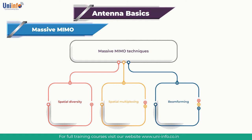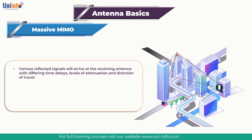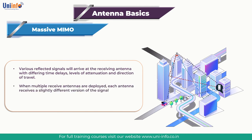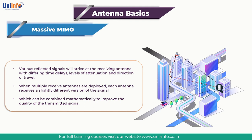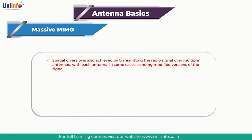MIMO builds on the fact that a radio signal between transmitter and receiver is filtered by its environment, with reflections from buildings and other obstacles resulting in multiple signal paths. The various reflected signals arrive at the receiving antenna with differing time delays, levels of attenuation, and directions of travel. When multiple receive antennas are deployed, each antenna receives a slightly different version of the signal, which can be combined mathematically to improve the quality of the transmitted signal. This technique is known as spatial diversity, since the receiver antennas are spatially separated. Spatial diversity is also achieved by transmitting over multiple antennas, in some cases sending modified versions of the signal.